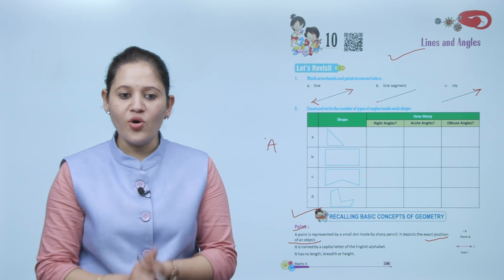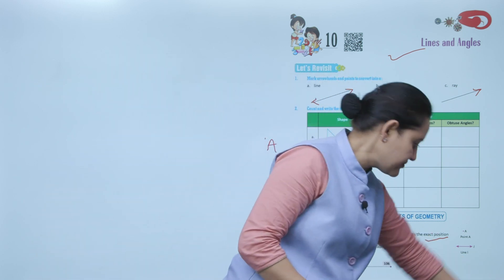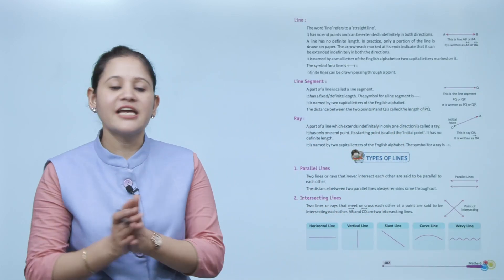A point has no length, no breadth, and no height. For example, point A has no length, no breadth, and no height. Next is line.